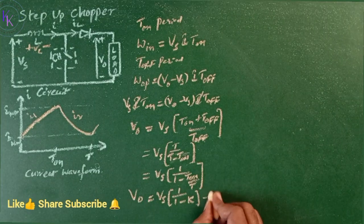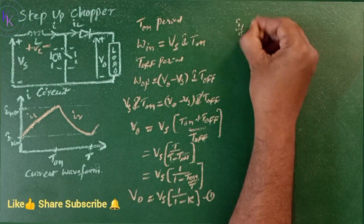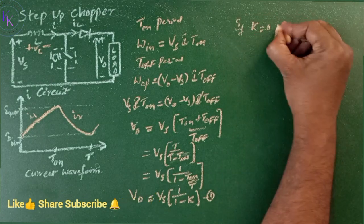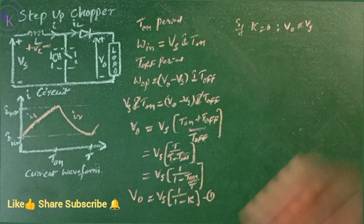Let this be equation number 1. Now, from this equation, if K equals 0, then V0 equals Vs.